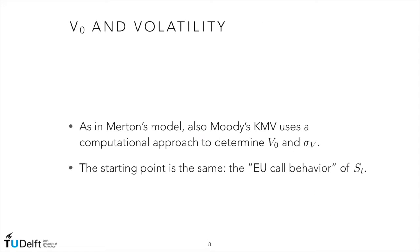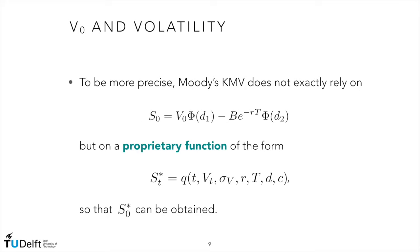As in Merton's model, also in Moody's KMV the quantities V0 and sigmaV are not directly observable and need to be inferred from data. The starting point is more or less the same — we exploit the European call behavior of equity. However, Moody's KMV does not exactly rely on the standard formula for a European call used under Merton's model; rather, they use a proprietary function that includes the European call formula but also adds extra arguments.